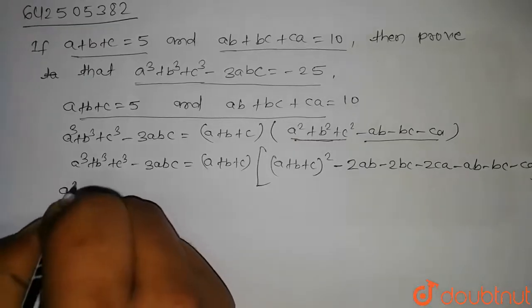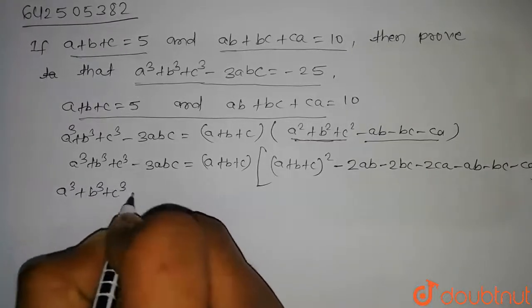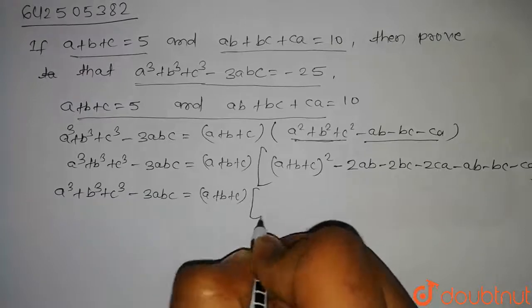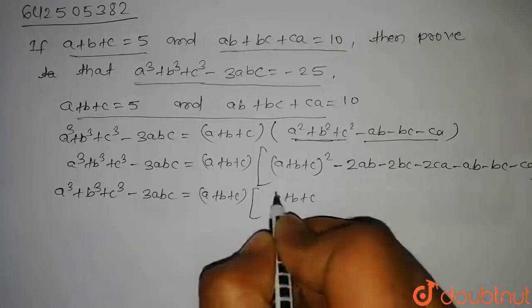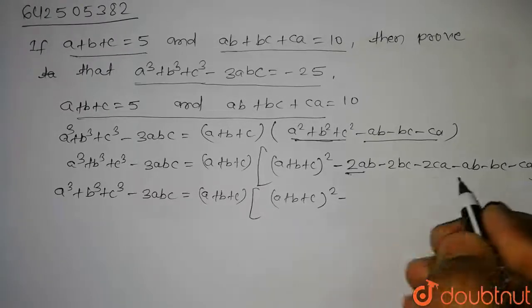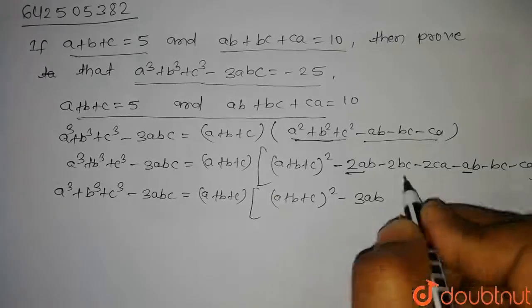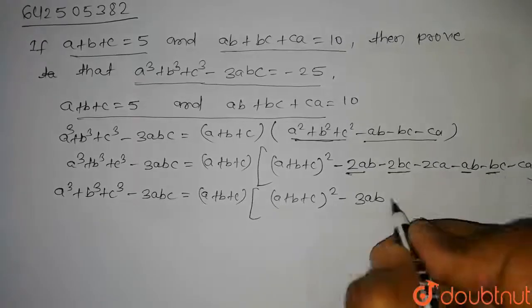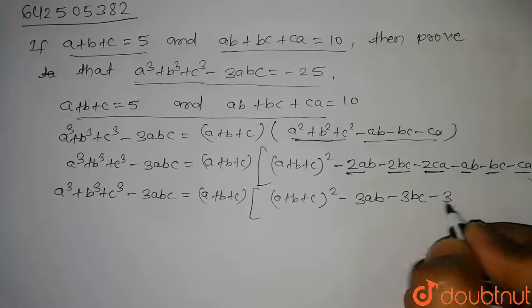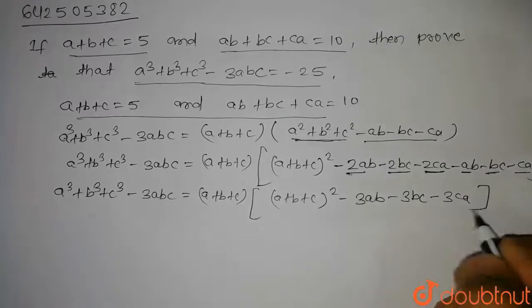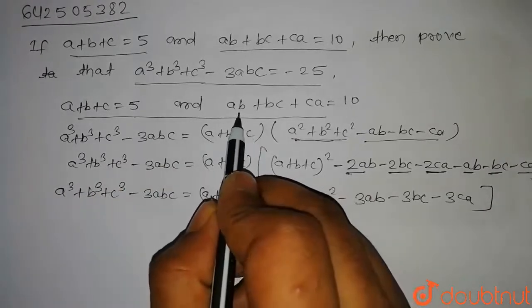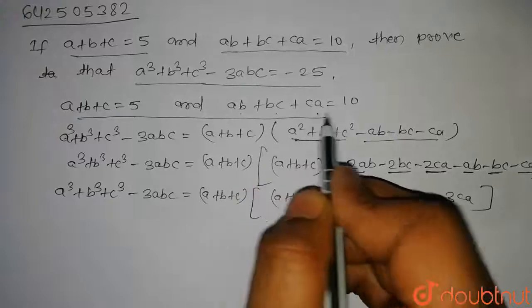On further solving, a³ plus b³ plus c³ minus 3abc equals (a plus b plus c) into [(a plus b plus c)² minus 3ab minus 3bc minus 3ca]. Taking minus 3 common from the last three terms gives (a plus b plus c) into [(a plus b plus c)² minus 3(ab plus bc plus ca)].